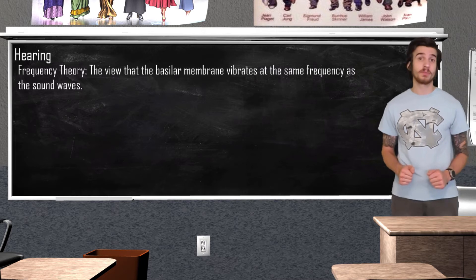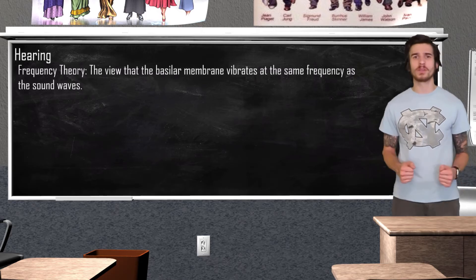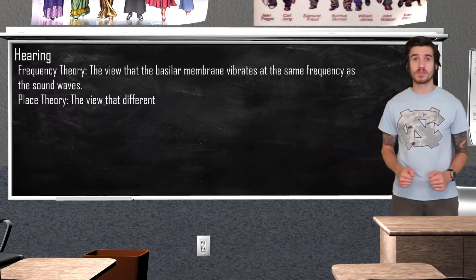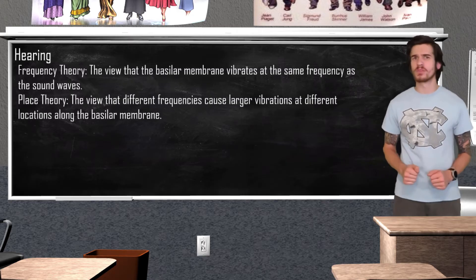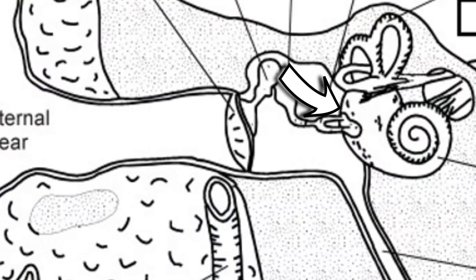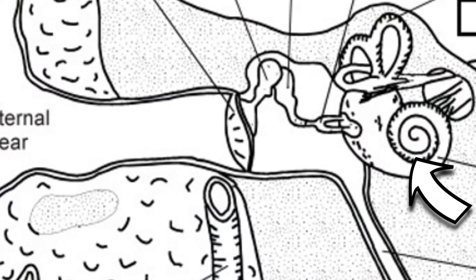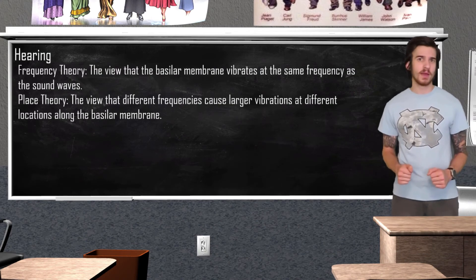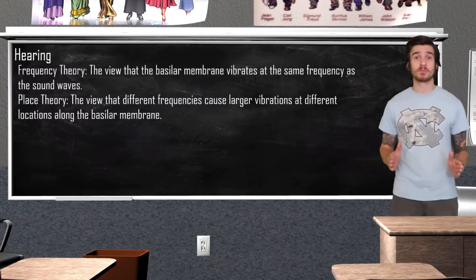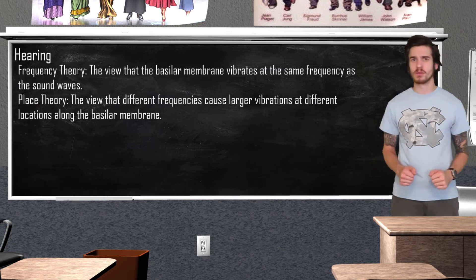For example, young children can typically hear pitches ranging from 20 to 20,000 Hz. So how can we explain this? According to the place theory, different frequencies cause larger vibrations at different locations along the basilar membrane. High pitch noises are going to cause maximum vibrations near the stirrup end of the basilar membrane, while lower frequencies excite hair cells at the opposite side. The brain looks at the area where the basilar membrane sent the message in order to determine the pitch of the sound wave. Both the frequency and place theory help explain our discrimination of pitch — frequency explains how we distinguish between low frequencies, while place explains our discrimination of higher pitch sounds.